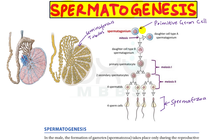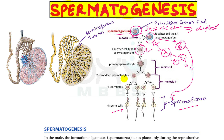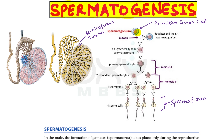The primitive germ cell, spermatogonium, is 2n — it has 46 chromosomes, meaning it is diploid. Mitosis takes place in the spermatogonium, forming two cells: Type A and Type B. Type A again divides into Type A and Type B, while Type B undergoes further maturation into spermatozoa.